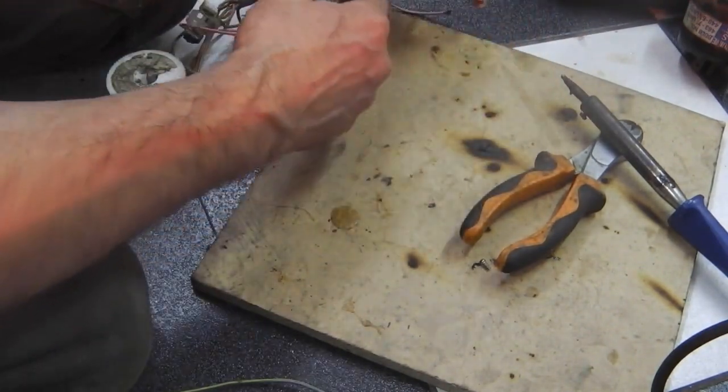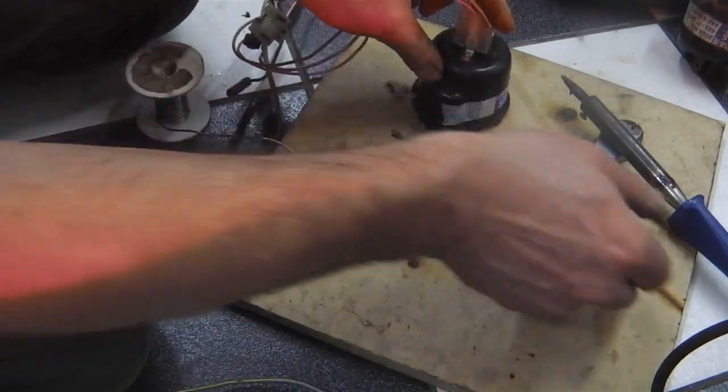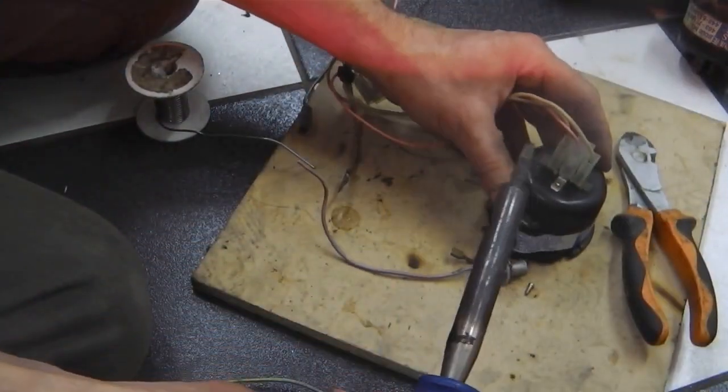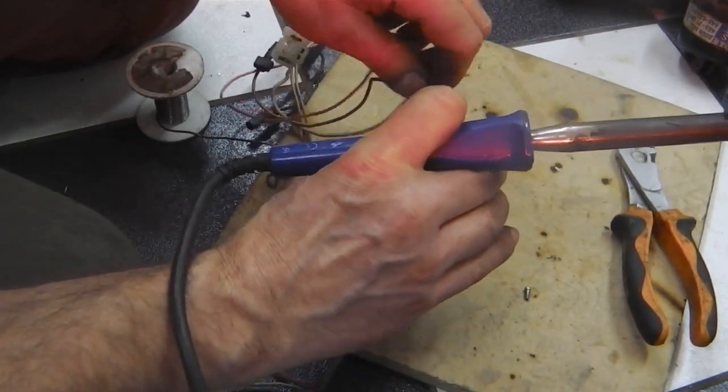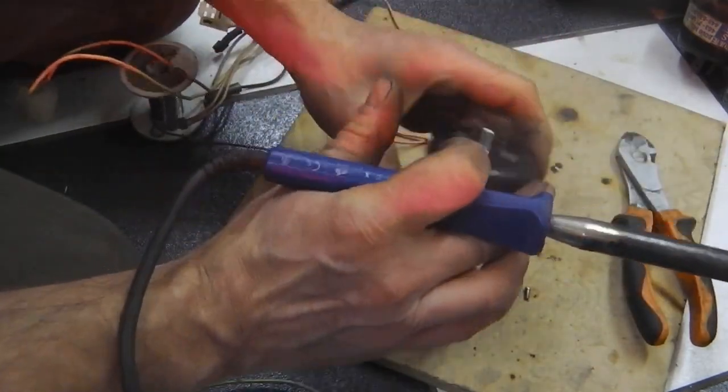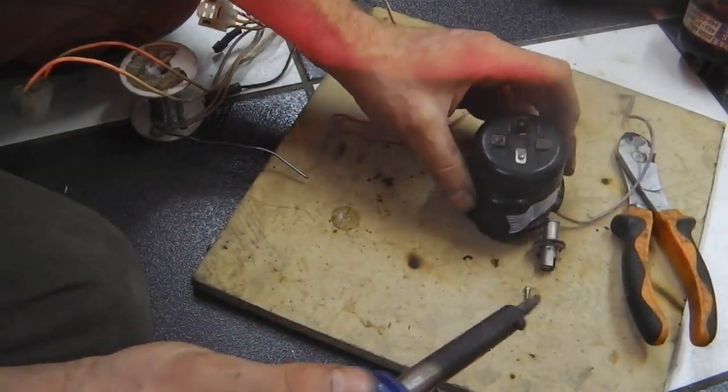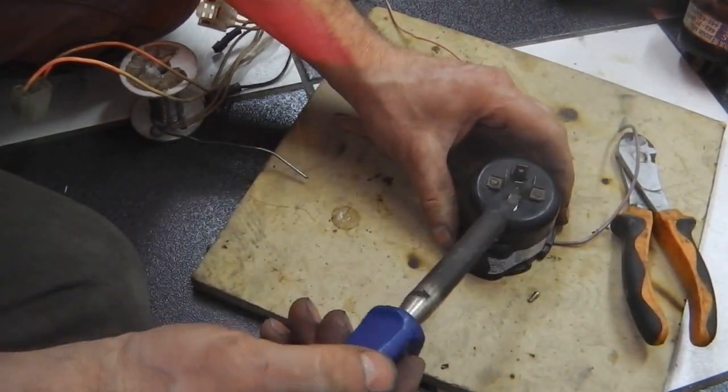So now both of those are done. Let's just cap that with solder, take this off. Stick it to the side there. So iron on.